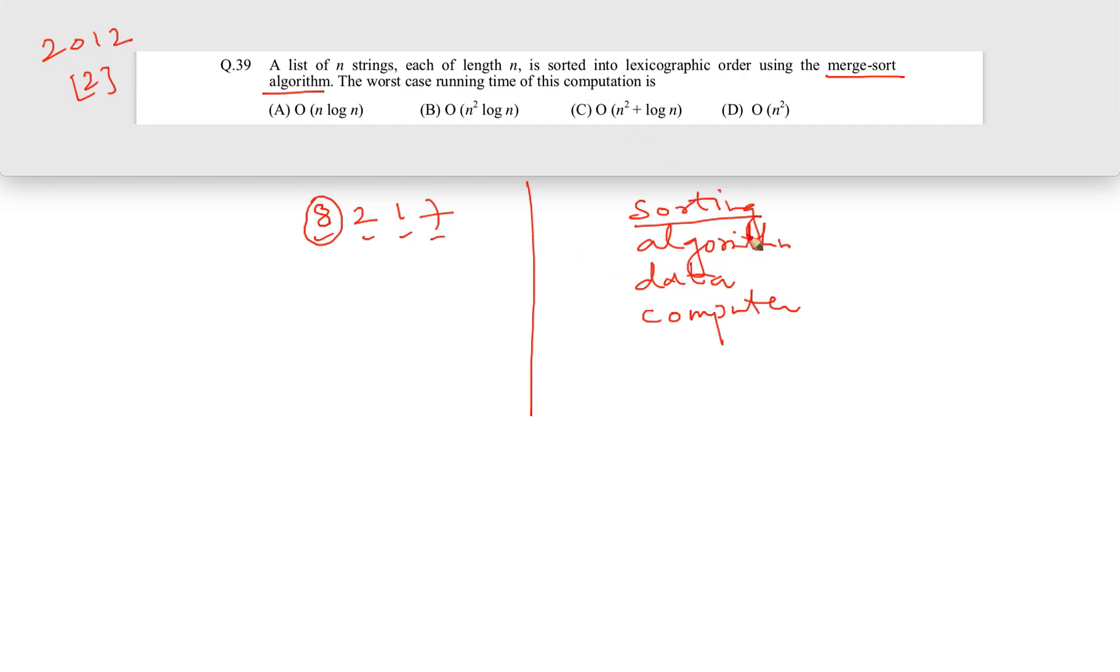For simplicity, they have said that each is of length n. Each of them is a string, but they have given the condition that all of them are of the same length, which is n.